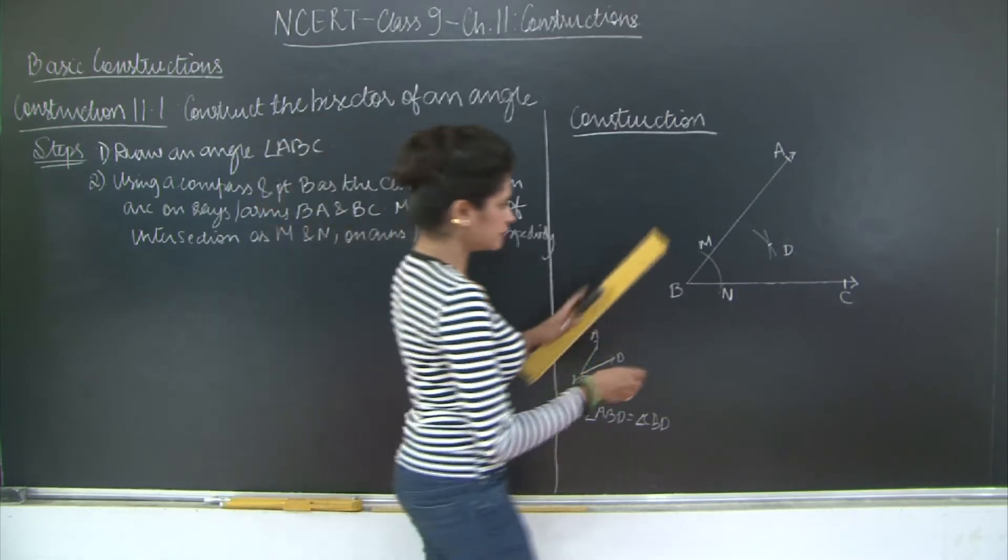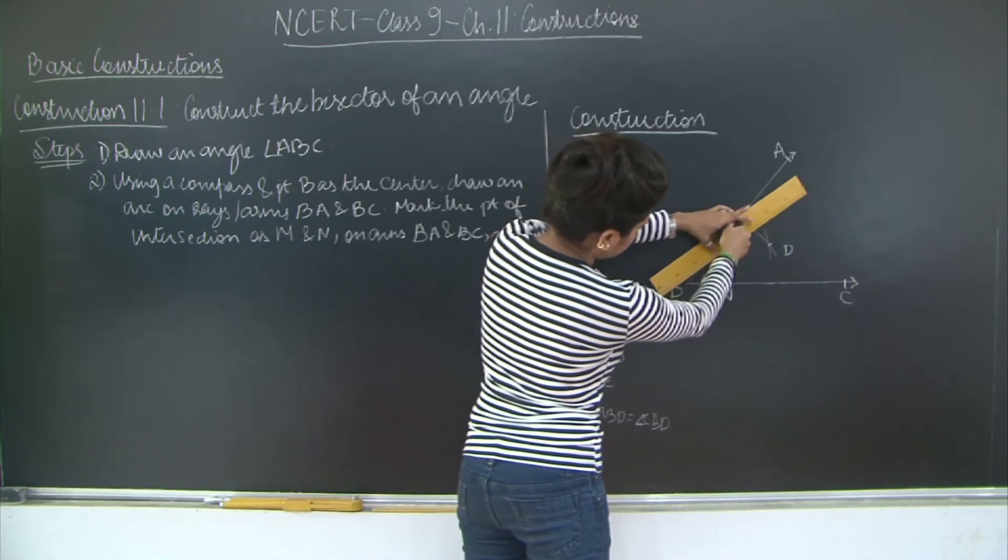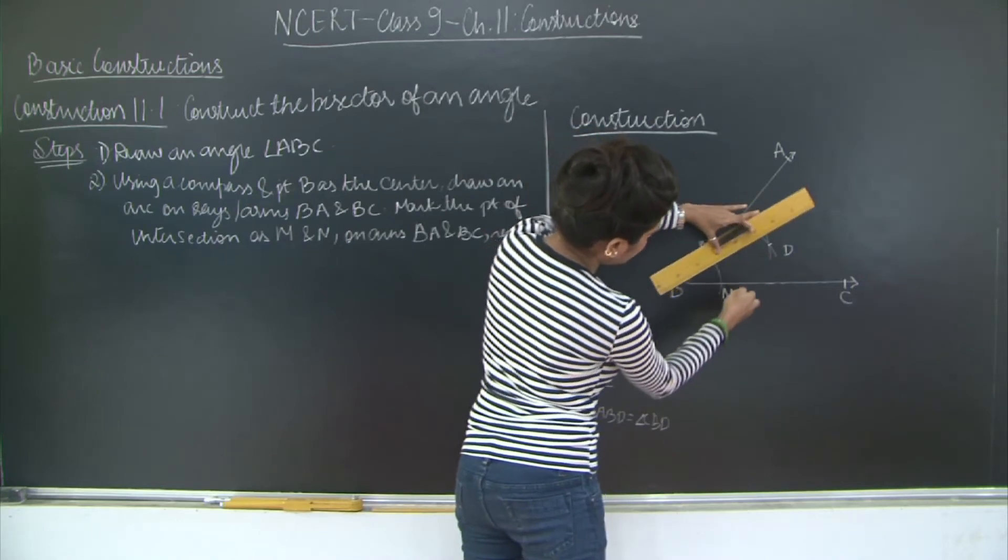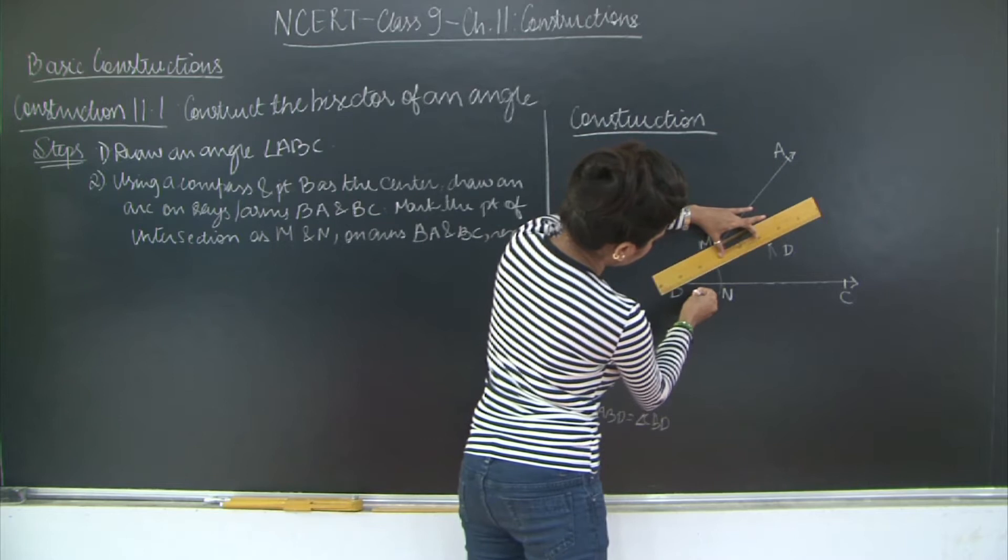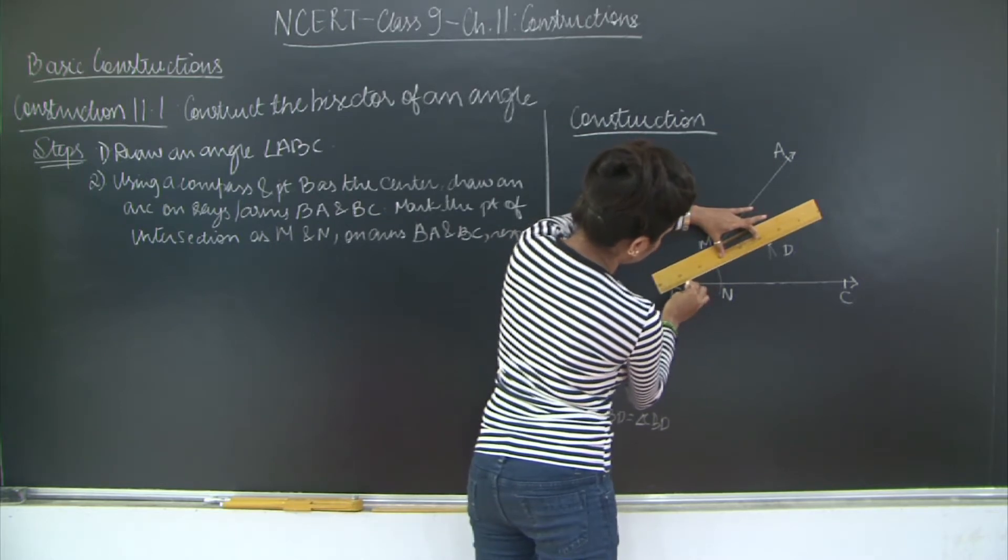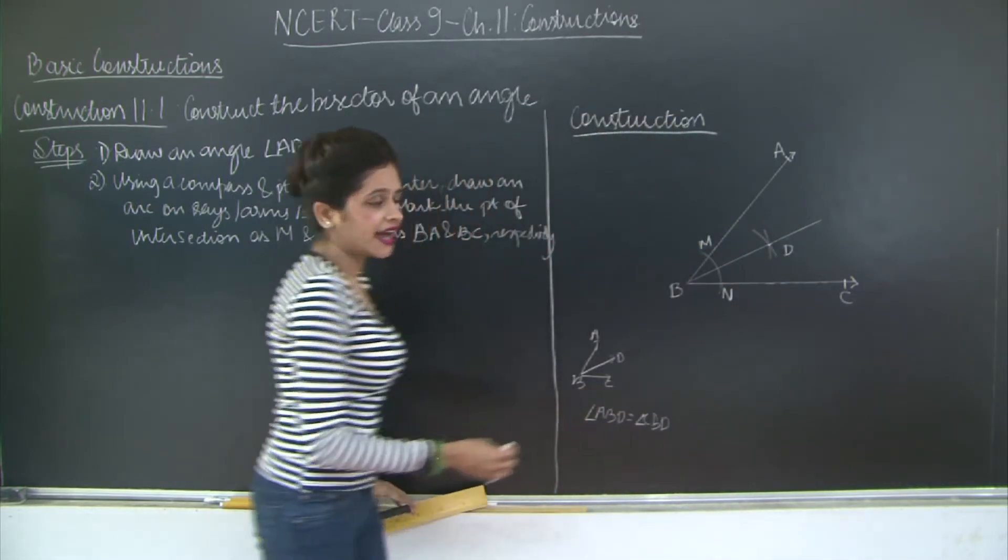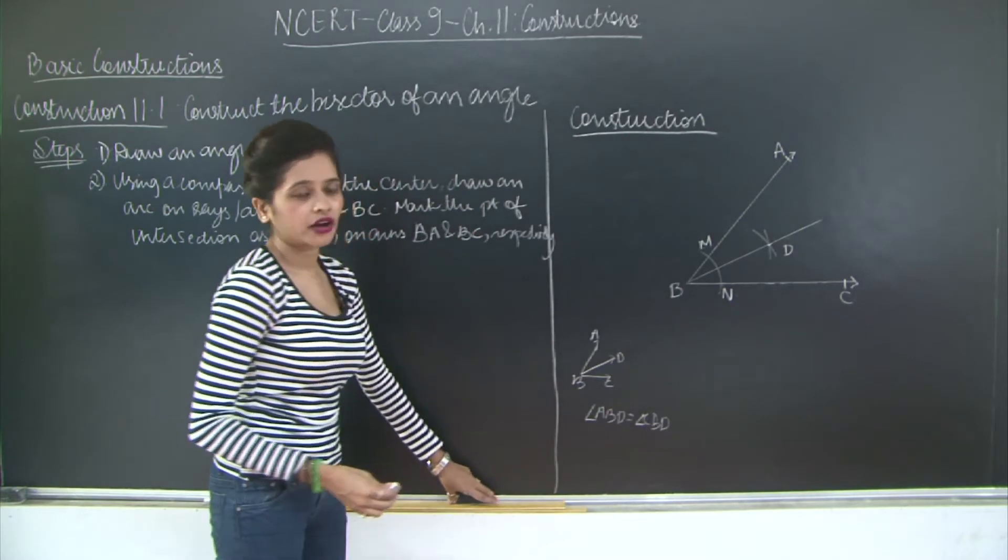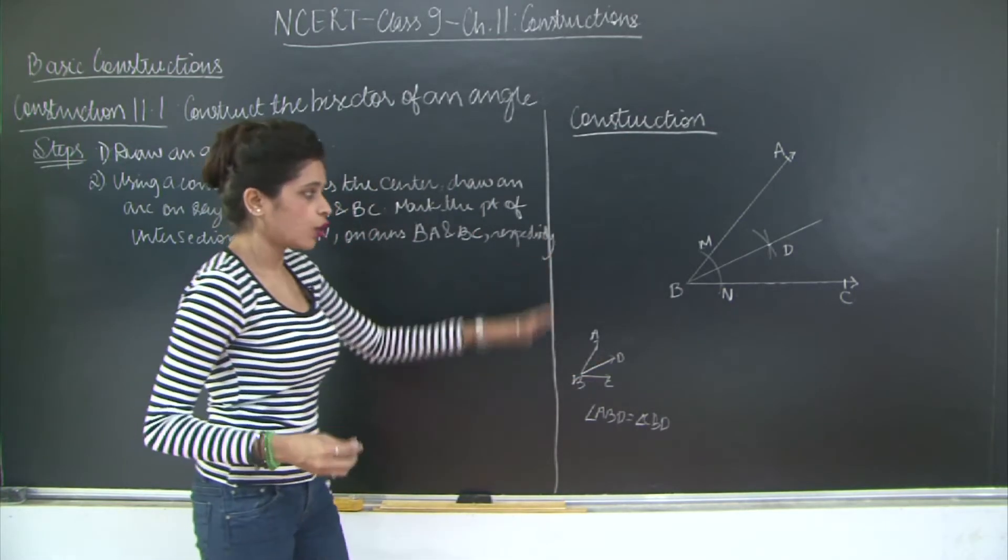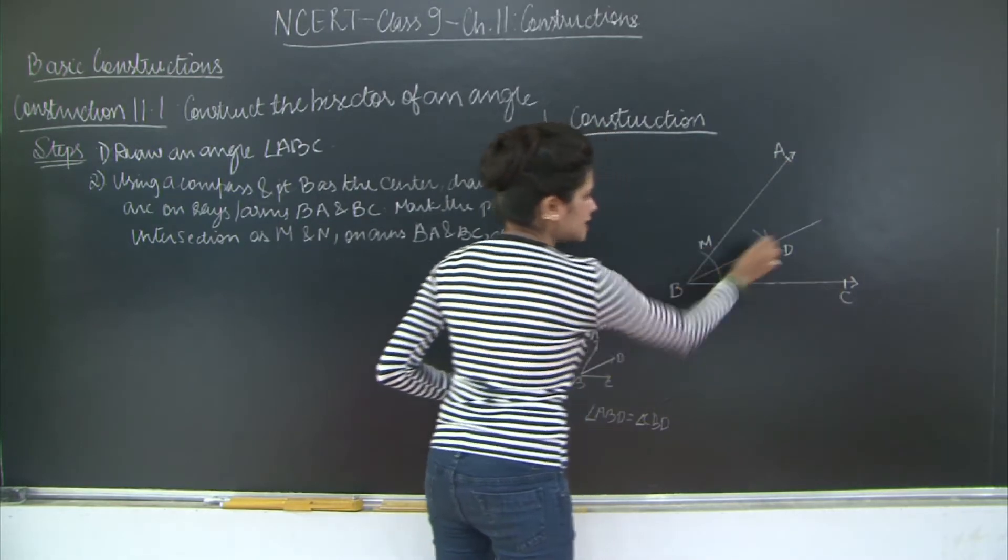you need to take your scale and you have to take this point. Join this point B and D. So BD here is the angle bisector of your angle ABC. We will also prove how angle ABD is equal to angle CBD.